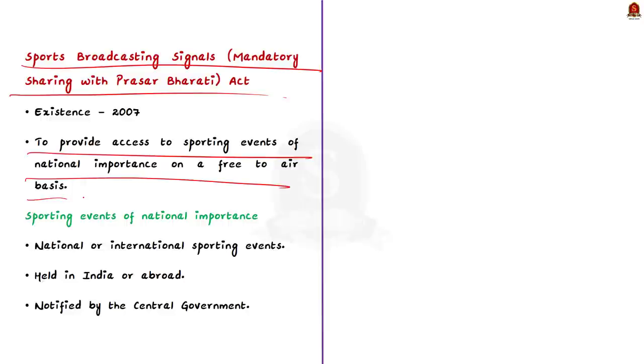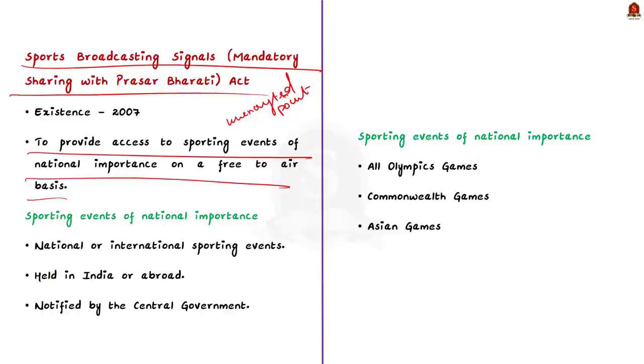And here, access is given to the sporting events of national importance. Here, free-to-air basis means the television and radio services broadcast the free-to-air services in unencrypted form. So, it allows any person with the appropriate receiving equipment to receive the signal and view or listen to the content. It does not require any subscription. So, now what about the sporting events of national importance? According to the Act, this means national or international sporting events which are held in India or abroad and those ones which are notified by the central government in the official gazette as national important ones. So, so far, central government has notified several sporting events as of national importance.